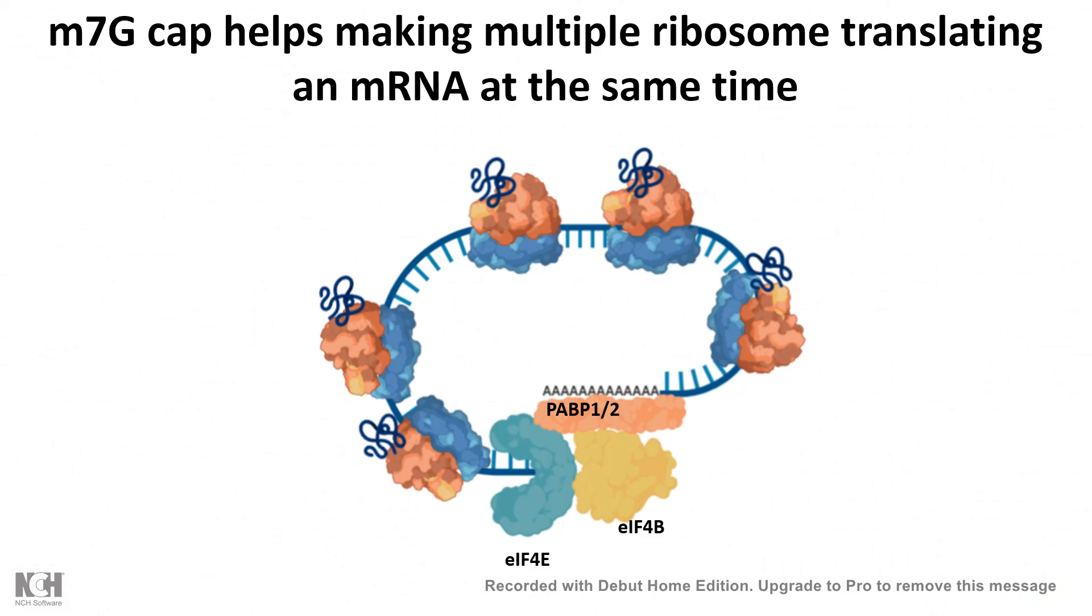M7G cap also interacts with the eukaryotic translation initiation factors like initiation factor 4E and 4G, which in turn coordinate with polyadenylation binding protein to hold the mRNA in a circular form such that several ribosomes can translate the mRNA simultaneously and enhance the rate of translation. This capping process has an important role in terms of translation as well.